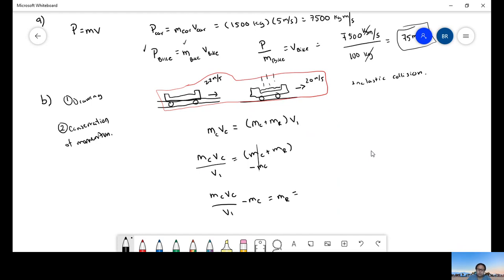Now let's do this. We're going to have 5,000 times 22 over 20, minus 5,000. So 5,000 times 22 over 20 minus 5,000. The mass of the rain is 500 kilograms.